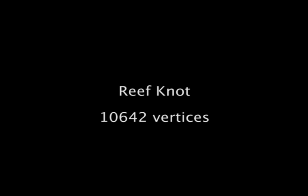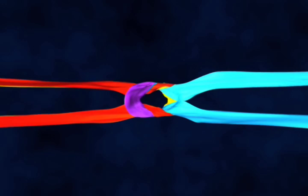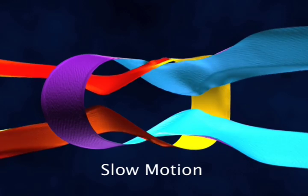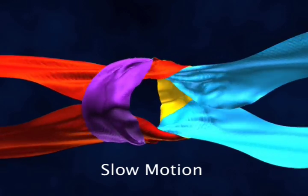We employ this method on several challenging scenarios. Here we tie our reef knot out of ribbons. Notice that the knot remains stable as the penalty forces and the internal forces struggle to find equilibrium.